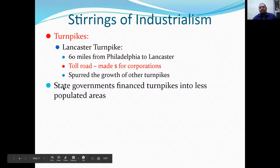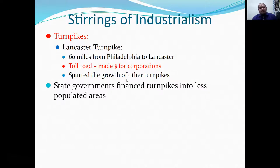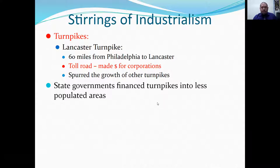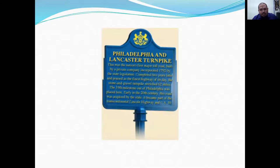Turnpikes are still a thing today, more common back east. State governments also financed turnpikes into less populated areas, connecting the country. The Lancaster Turnpike was the first major toll road built by a private company, incorporated in 1792 by the state legislature. It was completed two years later, praised as the finest highway of its day, and stretched 62 miles.